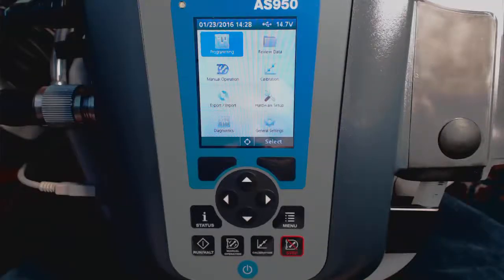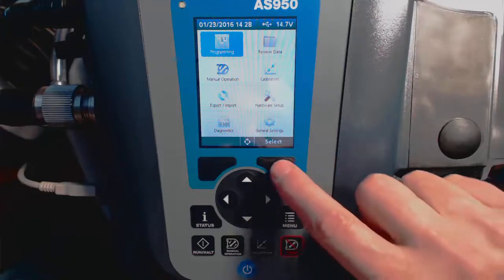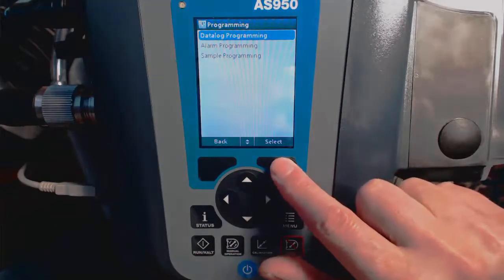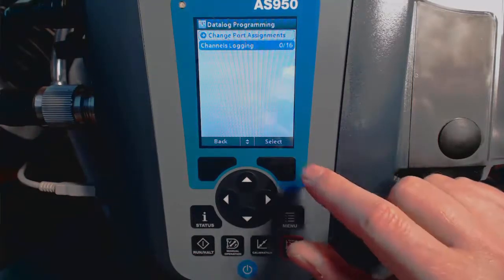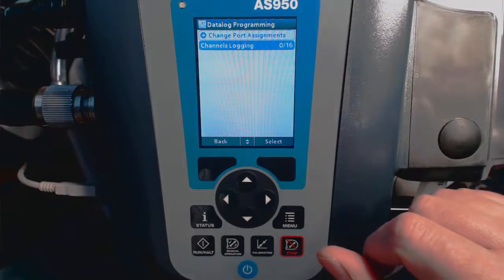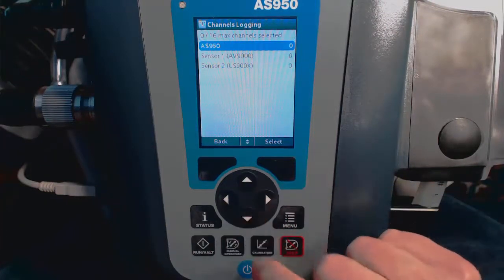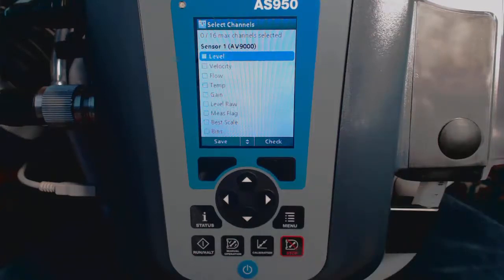Next, we'll set up our measurement data logging preferences. From the main menu, you'll select Programming, then go to Data Log Programming and select it. Now we will choose Channel Logging and highlight the AV9000 and press Select.